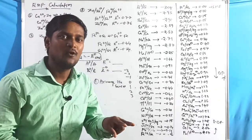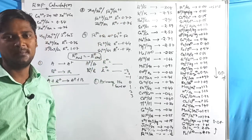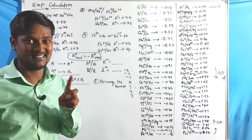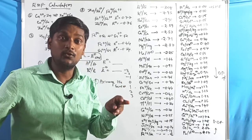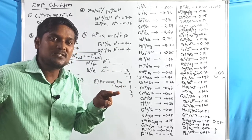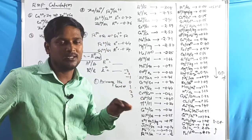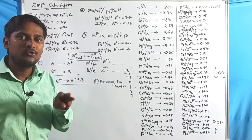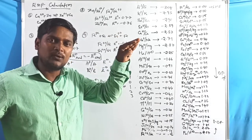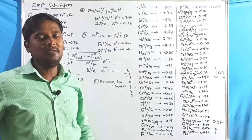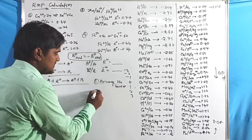If they are given one negative and one positive value, place the negative value at the top and the positive value at the bottom. If both values are negative, the more negative value goes to the top and the less negative goes to the bottom. If both are positive, the lower positive value goes to the top and the higher positive value goes to the bottom.